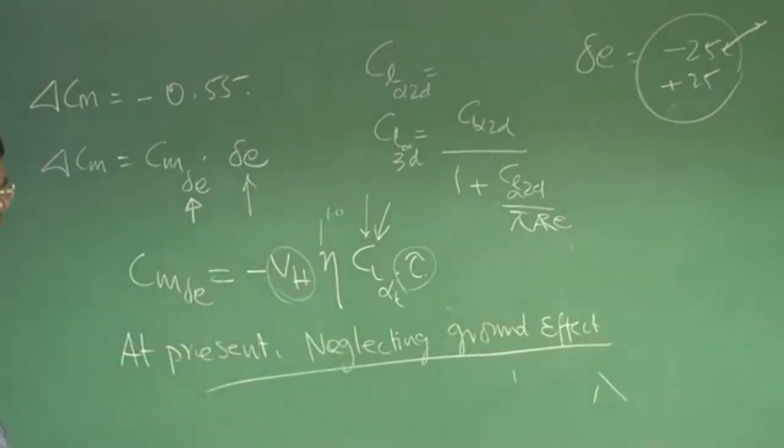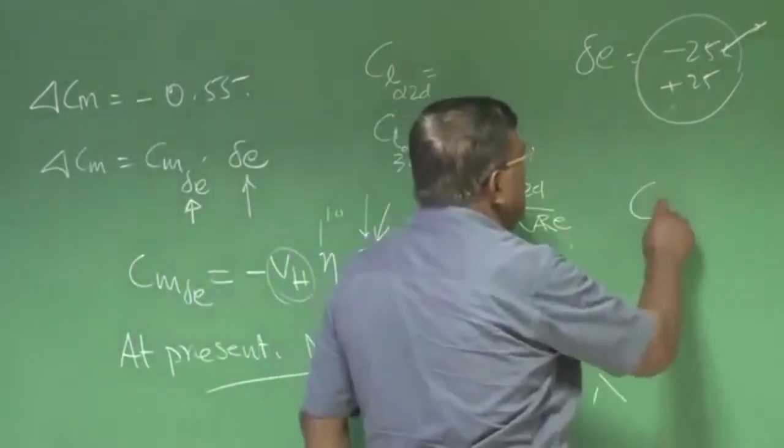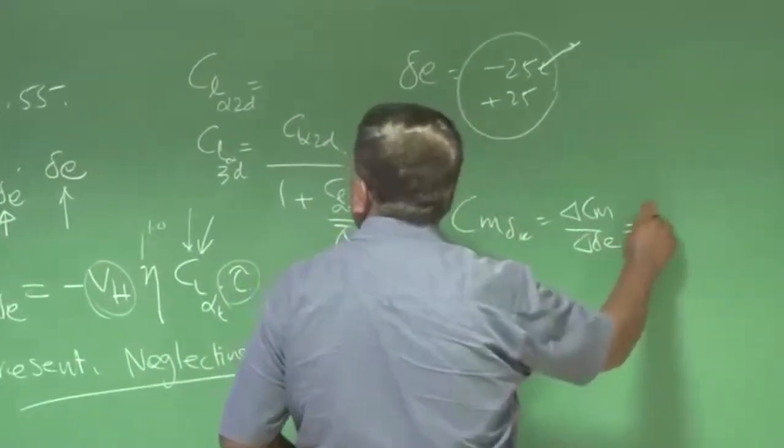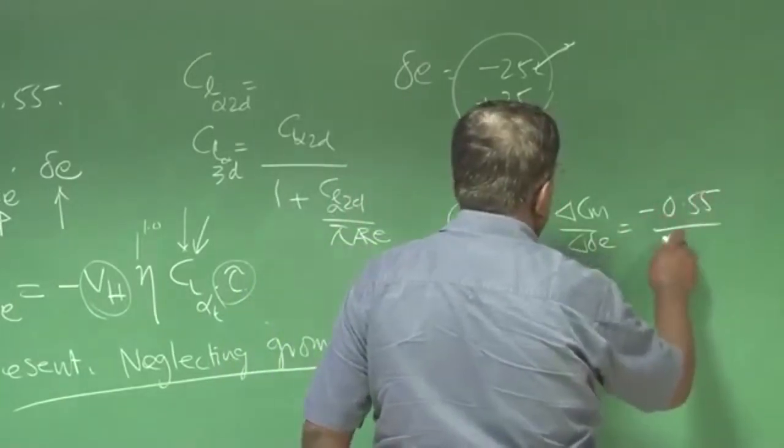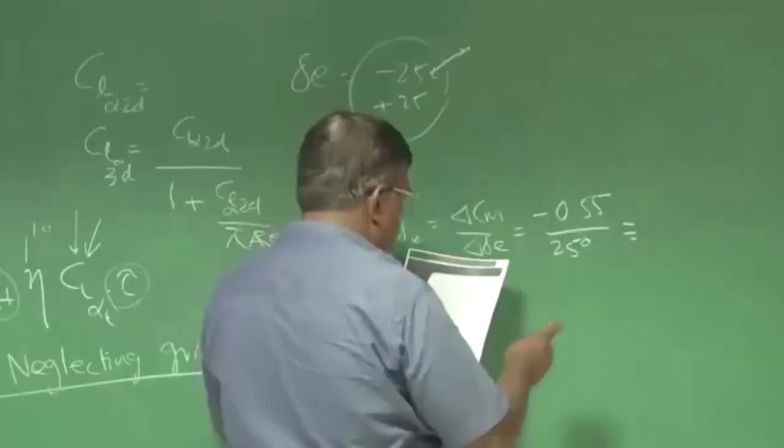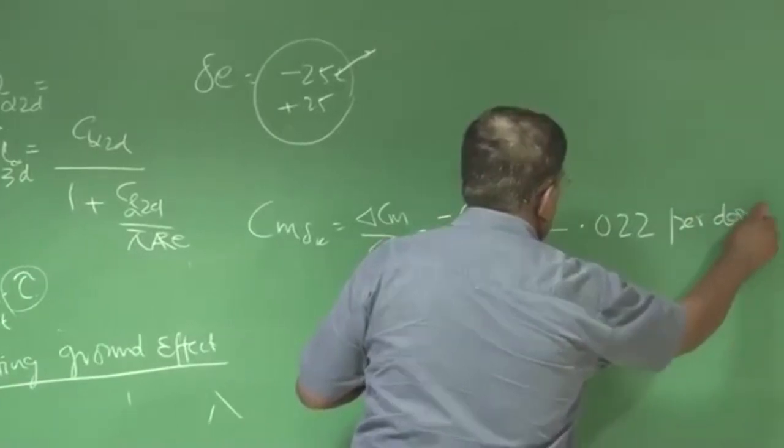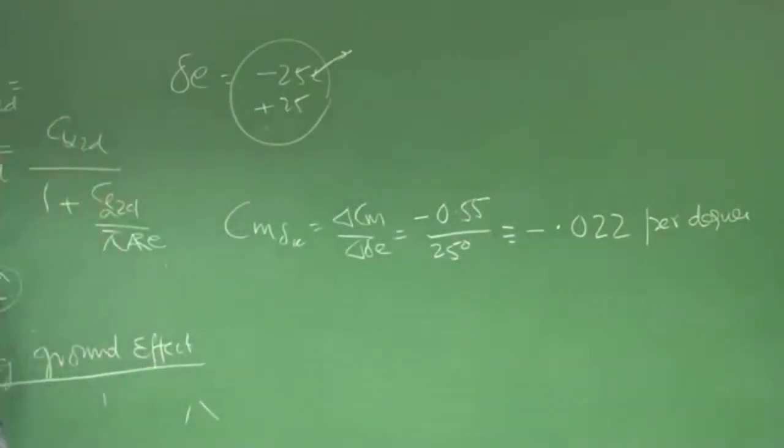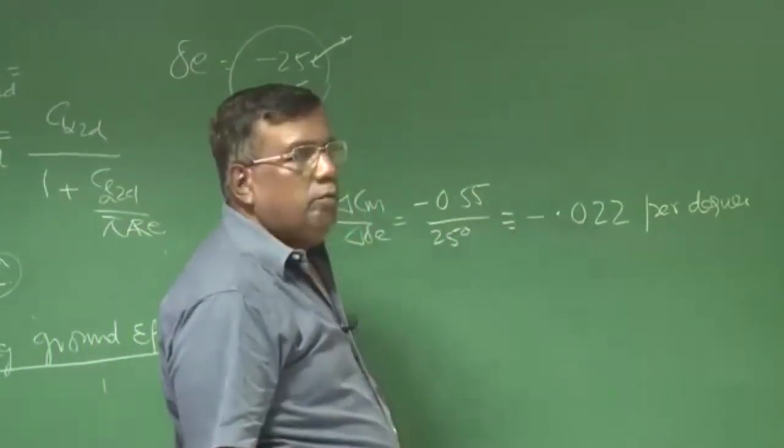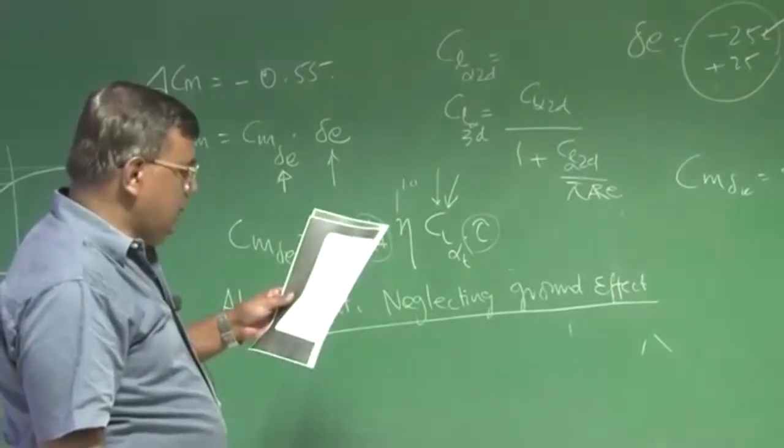Let us say we are neglecting this ground effect. Now this is CM_delta_E expression, and CM_delta_E if you see is delta CM by delta delta E, and we are taking minus 0.55 by delta delta E, which is let us say we are using 25 degrees. So this will become minus 0.022 per degree. You could see that in per radian, you have to simply multiply this number by roughly 57.3. So it will come around minus 1, around that range minus 1, 1.1, that is the typical value of CM_delta_E.